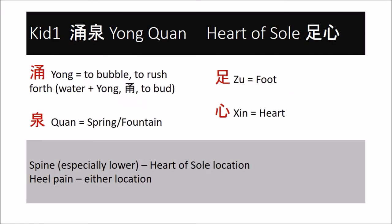Kidney one, Yongquan, the bubbling spring — the spring that bursts forward — is related by name to heart one, Jiquan, the supreme spring, one of the connections between the two Shaoyin channels. The character chuan as spring appears also under the knees, as in spleen 9 and gallbladder 34, as well as at the ankle at kidney 5, and suggests a sort of push upwards — and this is what happens at the center of the foot.